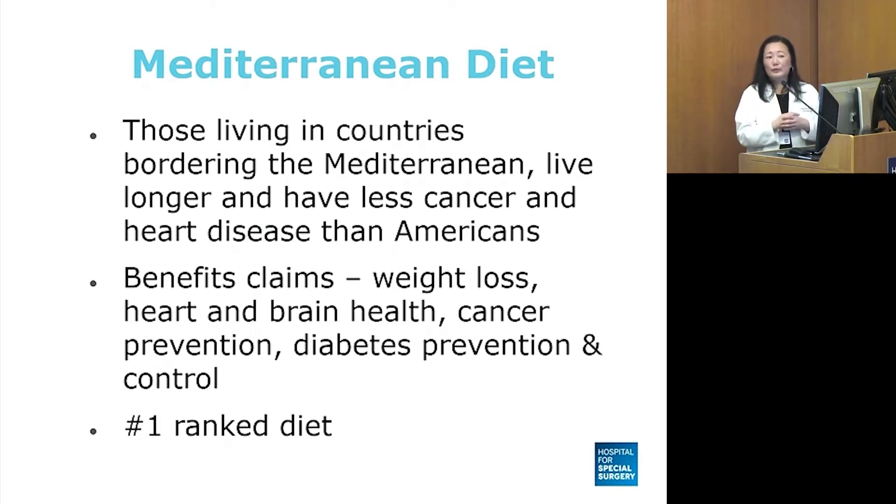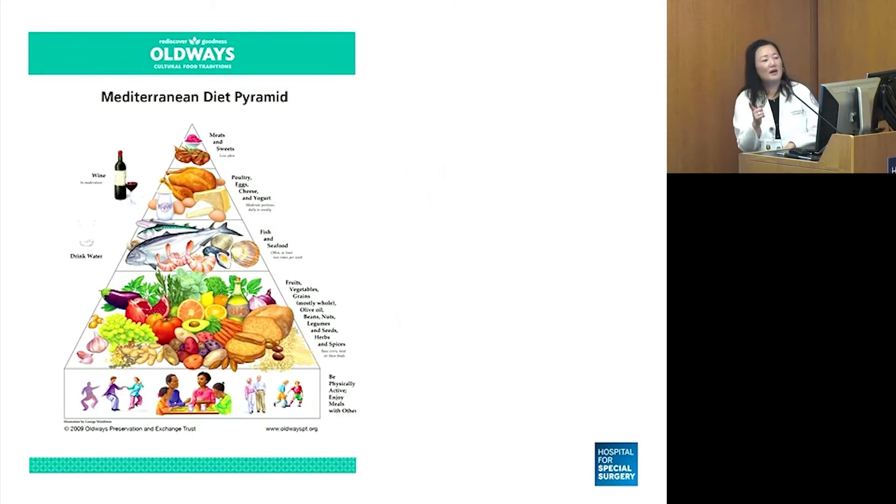The benefit claims would be weight loss, heart and brain health, cancer prevention, diabetes prevention and diabetes control. This next slide was created by Oldways, which is a non-for-profit, and it basically put together a food guide pyramid.